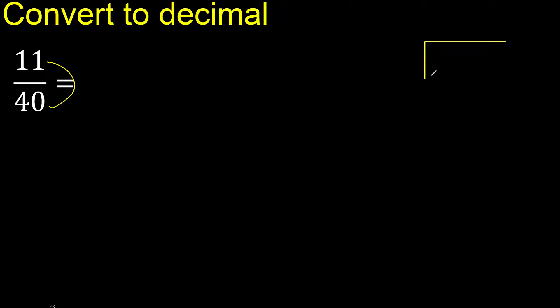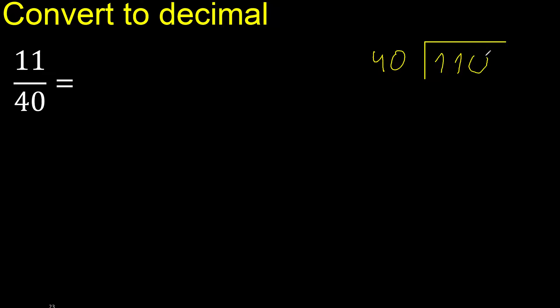11 divided by 40. 11 is less, therefore complete — always complete with 0.